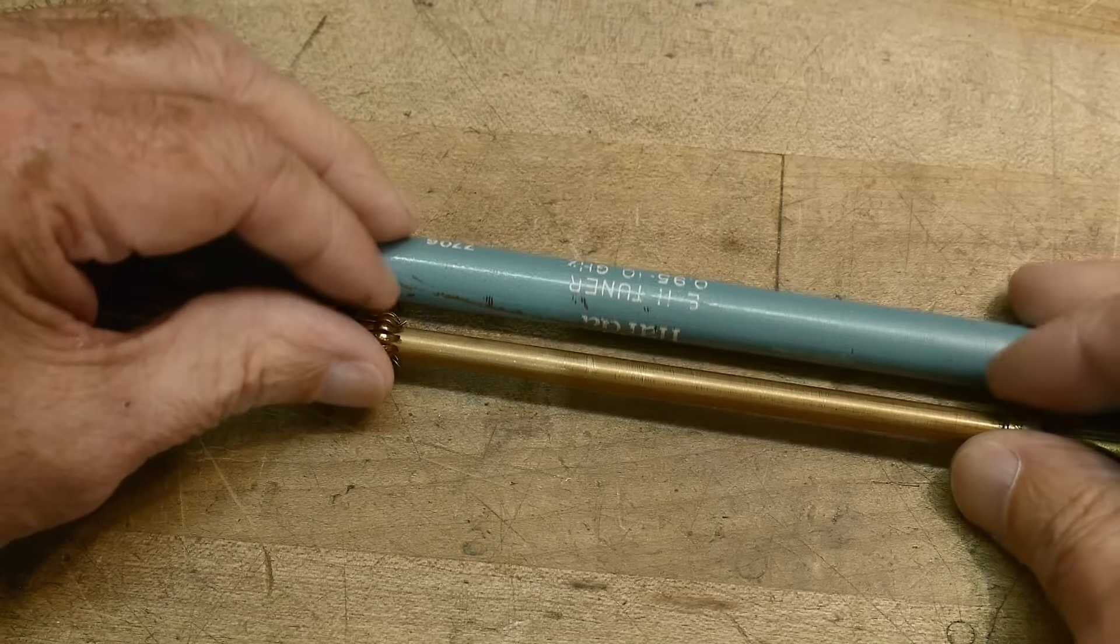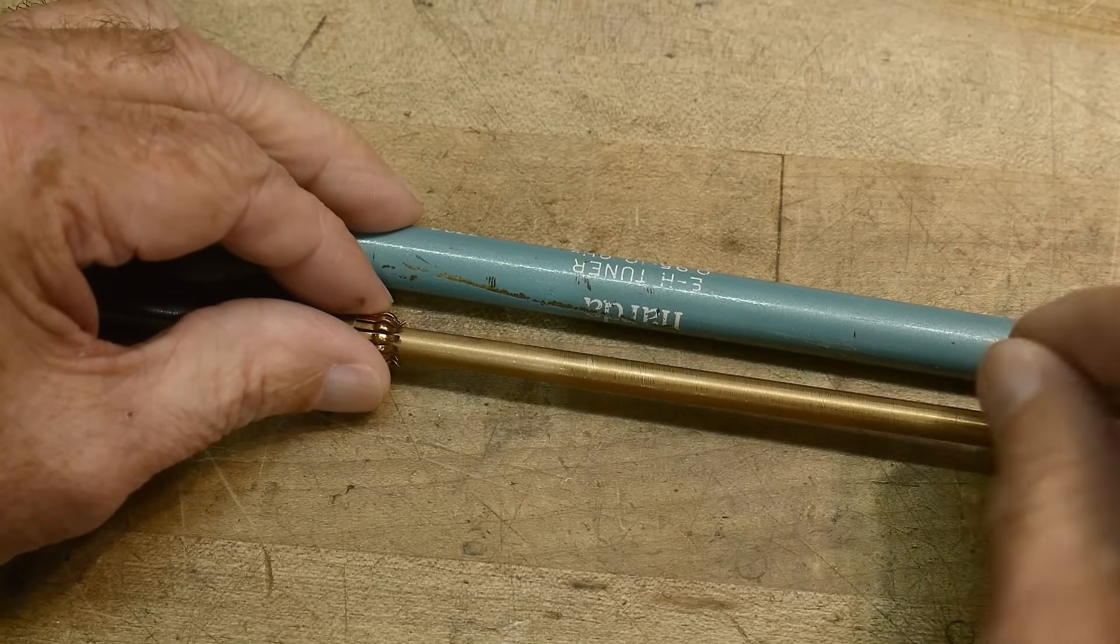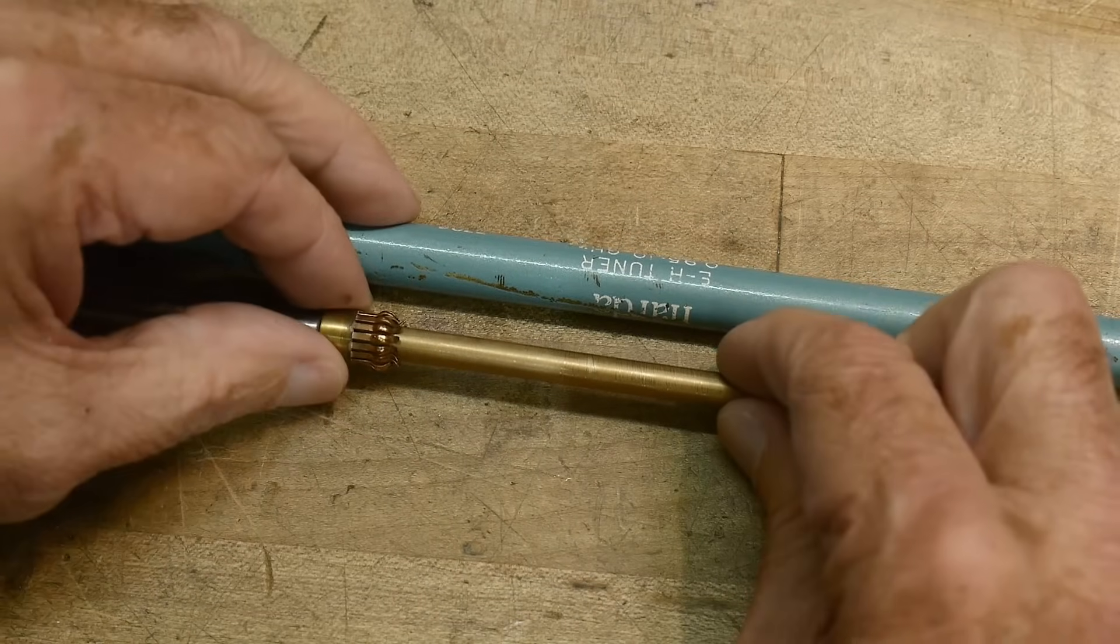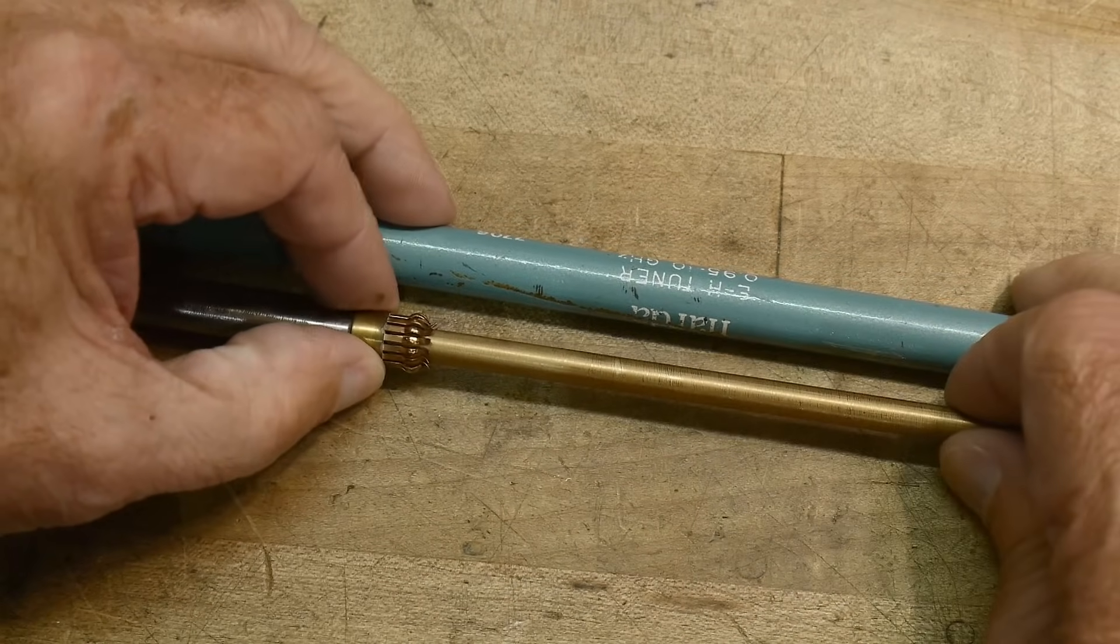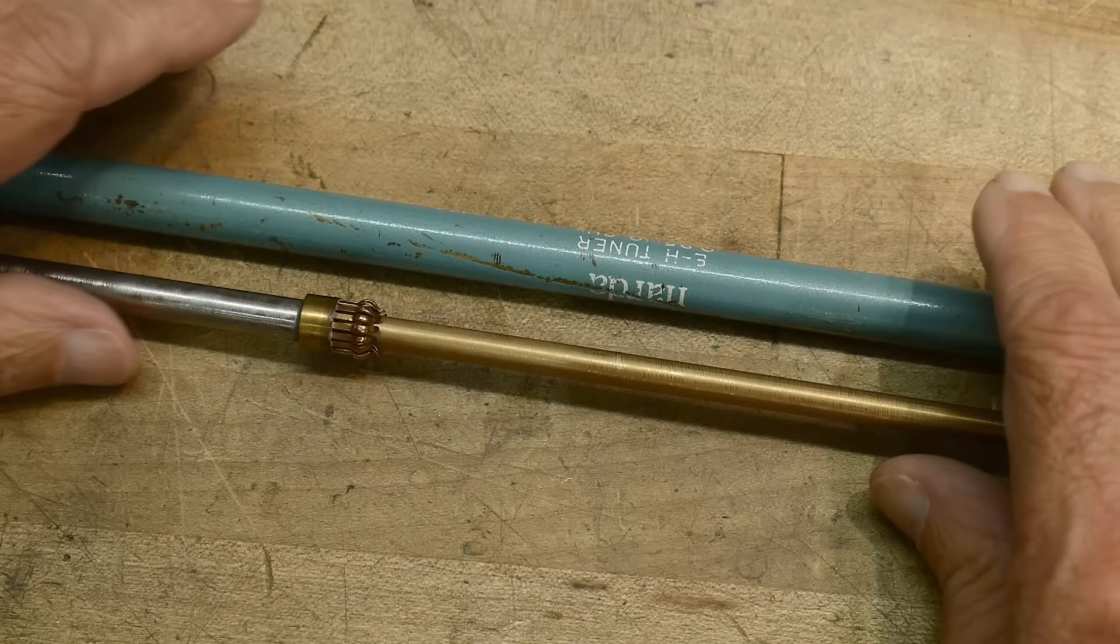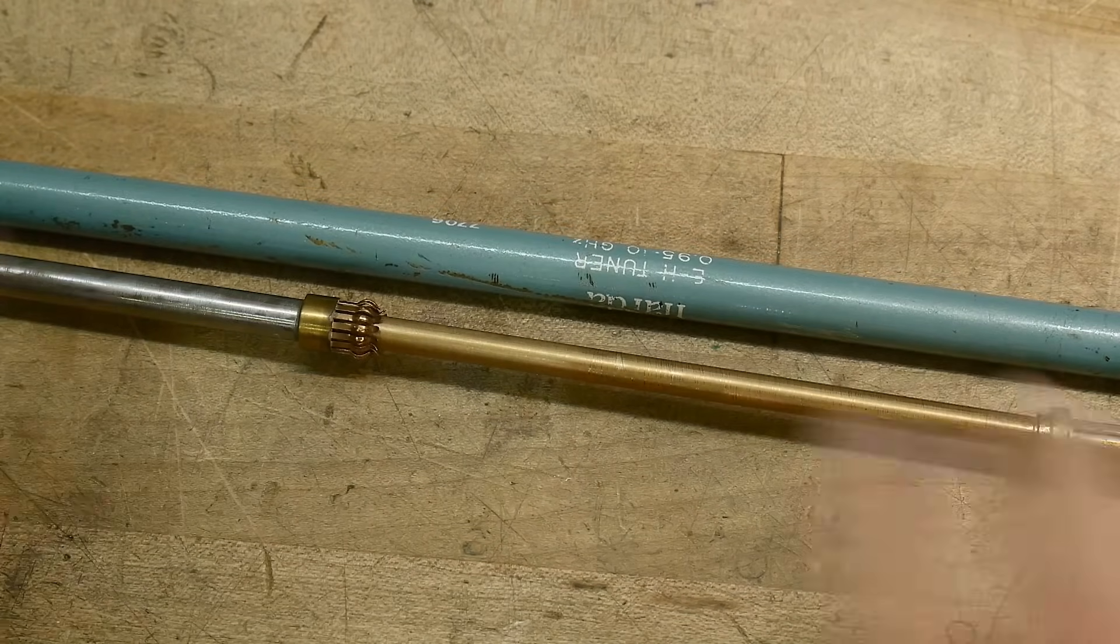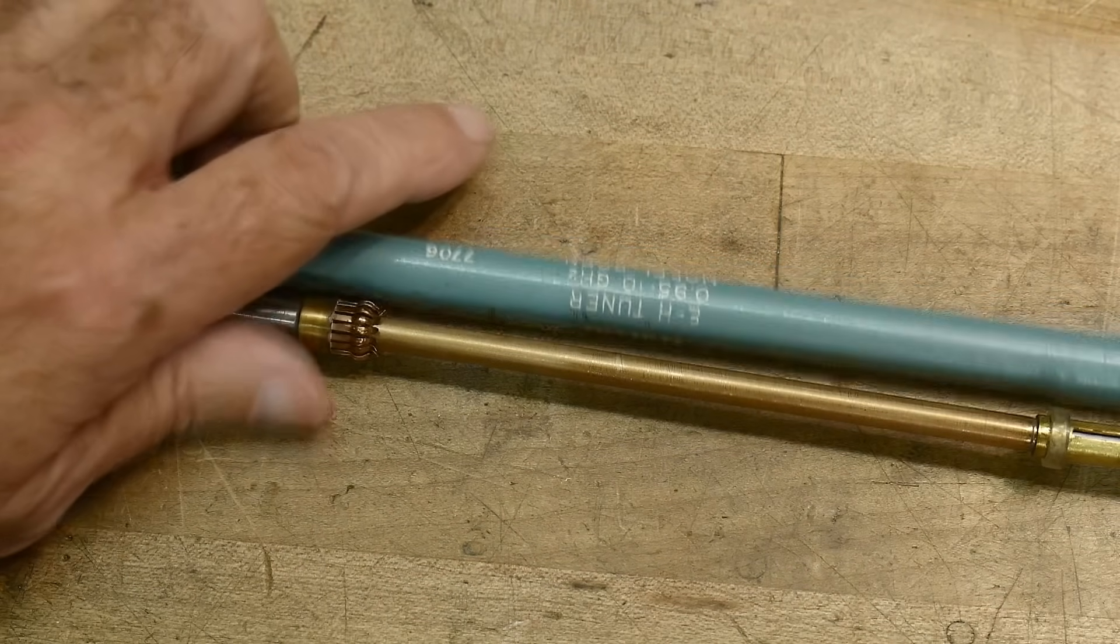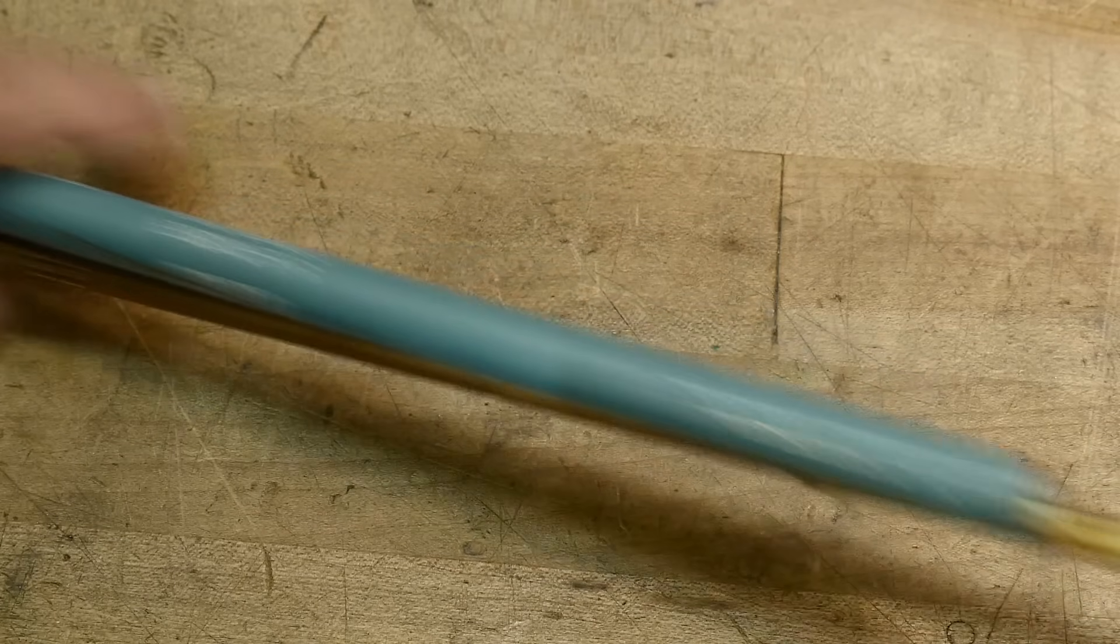And now this really, this section right here really is a transmission line. It's just center conductor and outer conductor. And then this slides in and out. So yes, this is a stub, a tuned stub. So this part is kind of explainable. So now that you kind of see the overall nature of this thing, let me show you some pictures that I've drawn in Fusion 360 that will help you understand what's going on.